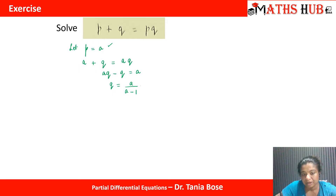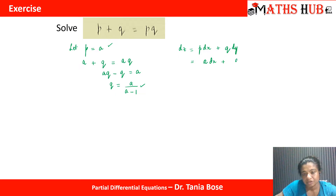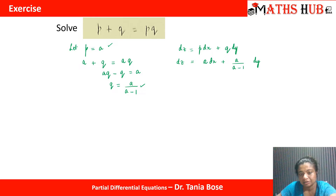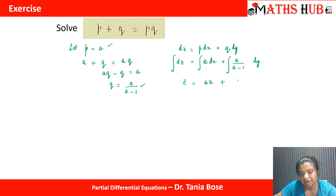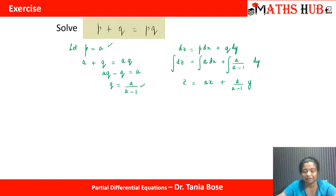We have P = A and Q = A/(A−1). Substituting into dZ = P dx + Q dy gives dZ = A dx + (A/(A−1)) dy. The variables are easily separated, so integrating gives Z = Ax + (A/(A−1))y + C, and this is our answer.